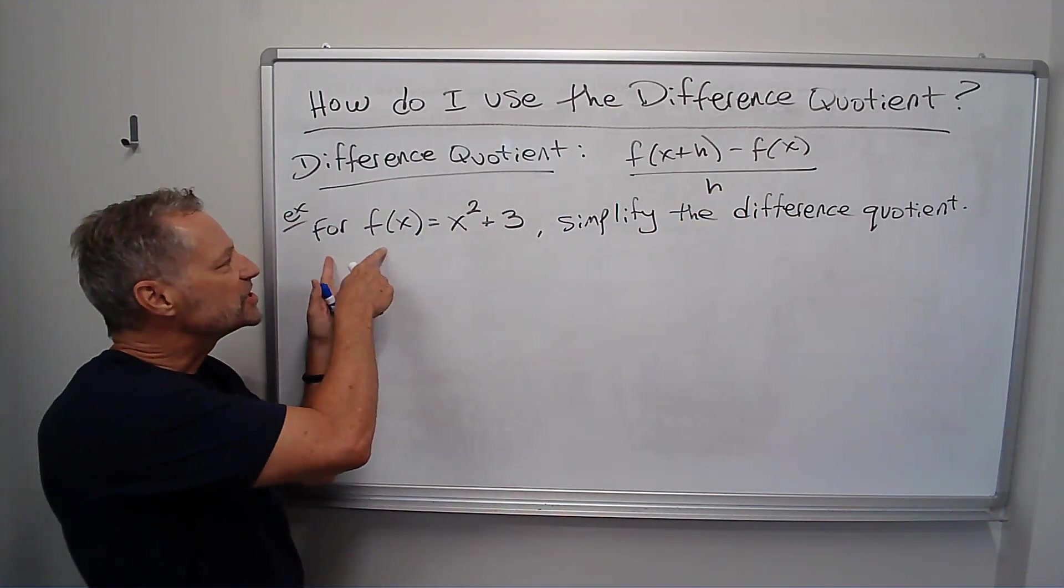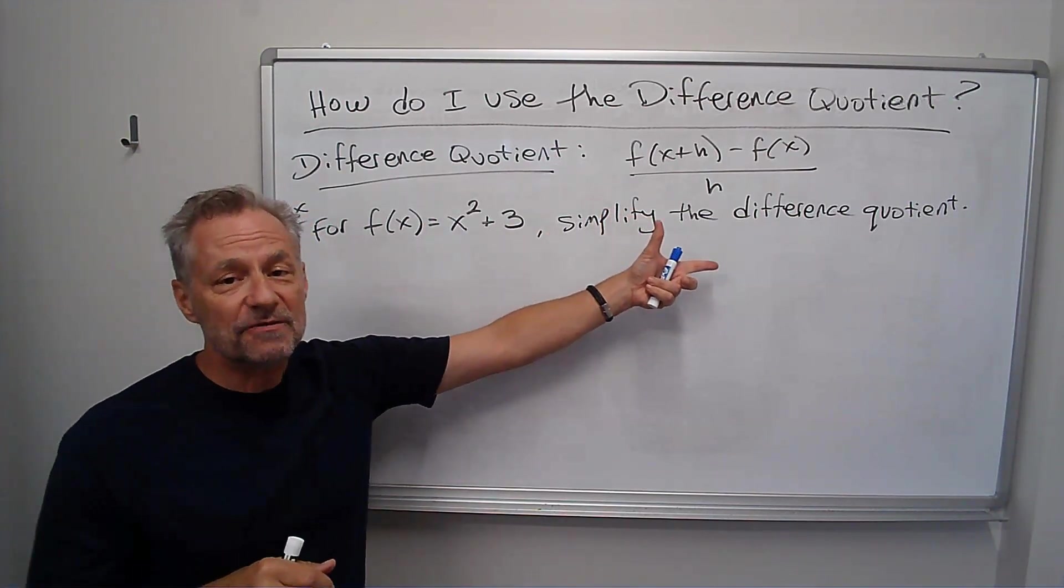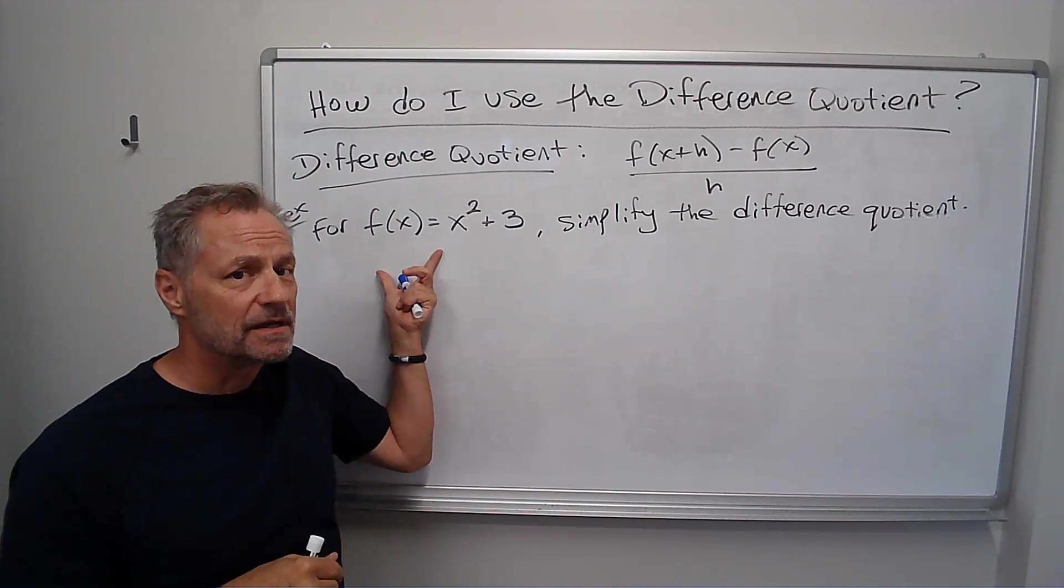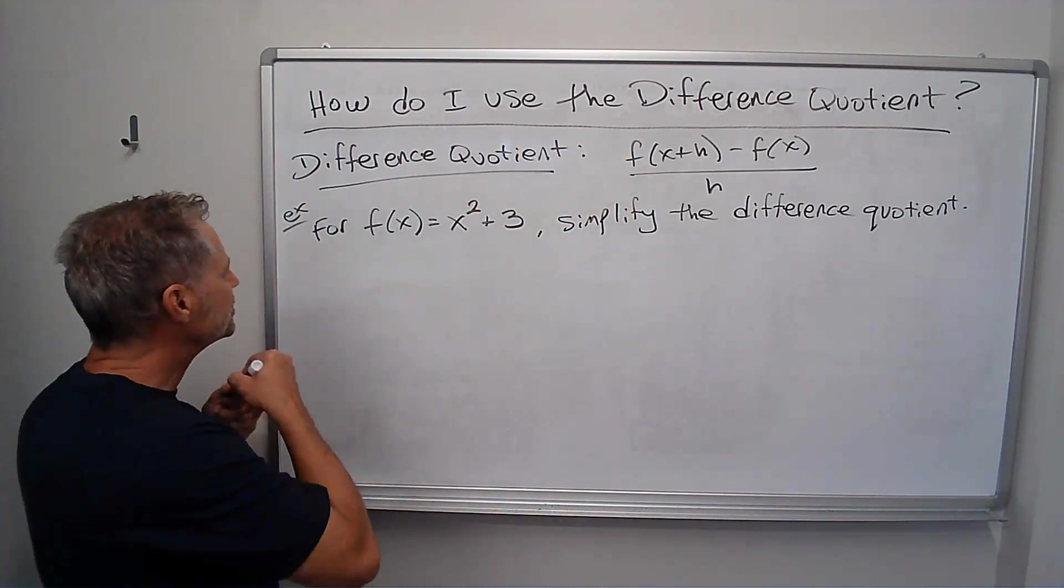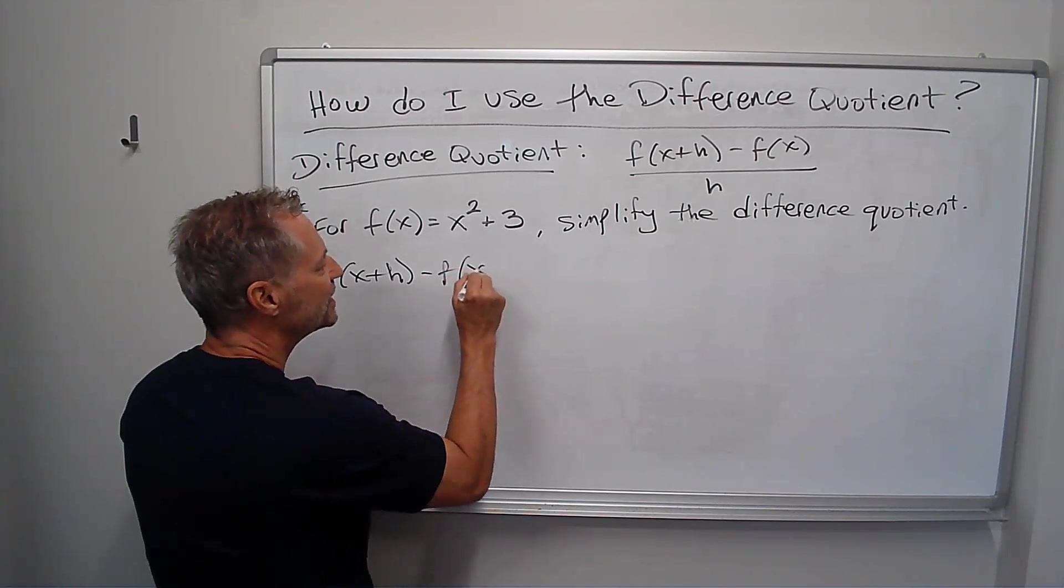Okay, so I've got a function f of x equals x squared plus 3. I want to simplify the difference quotient using this as my function f of x. So first off, let's write down the difference quotient, f of x plus h minus f of x all over h.